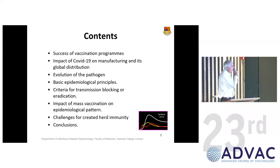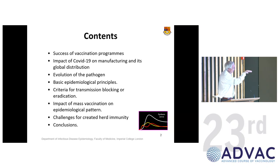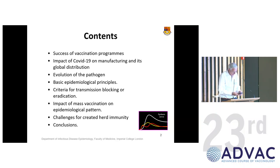I'm going to move quickly through the first bit, which is assessing the impact and evolution of the pathogen. I want to say a little bit about evolution — it's not in medical curricular teaching, which it should be, given the importance of genetics. Then I'm going to spend most time on the epidemiological principles, and at the end, I'll address how difficult it is to create herd immunity.